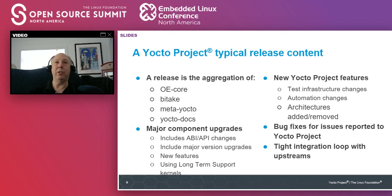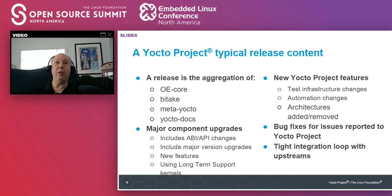What is in a release? There are the main core components: OE-core, which is our OpenEmbedded base project; BitBake, our build system; Poky, our reference release; and Yocto documentation, which we're very keen on. Major components include ABI, API, major version upgrades, and some 1,300 packages we maintain for our cross-build system. New features include test infrastructure changes and automation changes. For a project this big, you have to have automation to survive from release to release. We also add and remove architectures to make sure we're up to date with the latest BSPs.